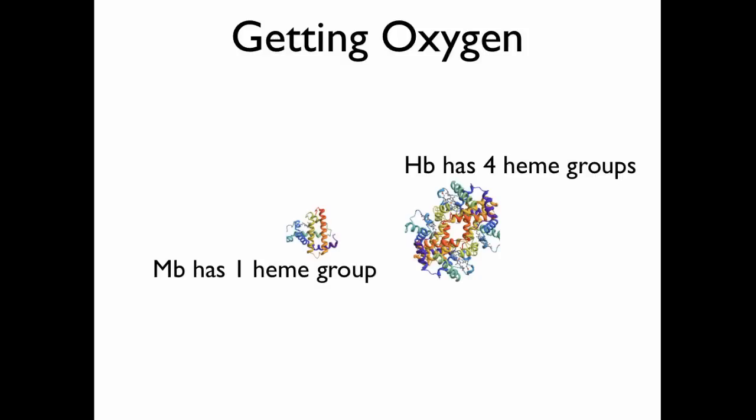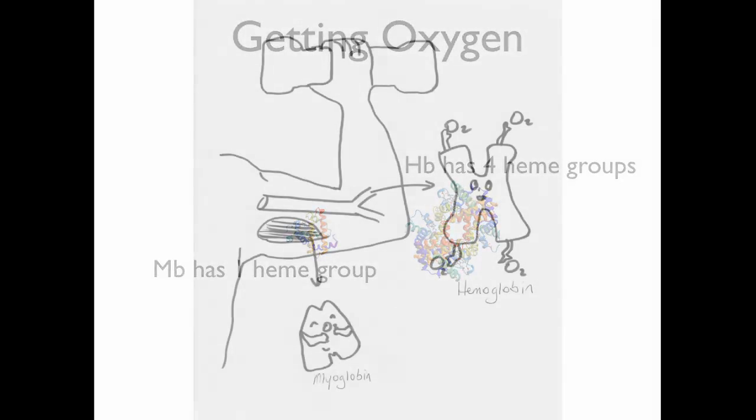Structurally, they're very different. Myoglobin has one heme group, and can therefore only bind one molecule of oxygen, whereas hemoglobin has four. And this difference in structure is going to account for a lot of the differences in function that we're going to see.